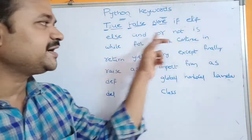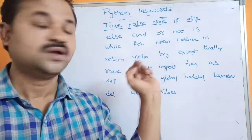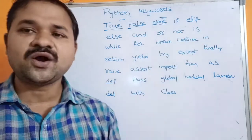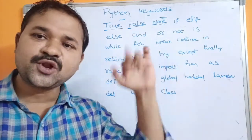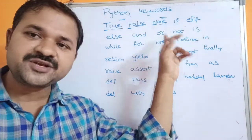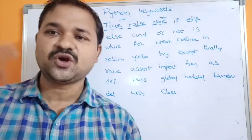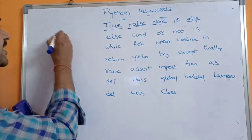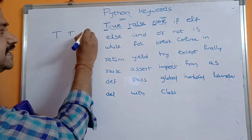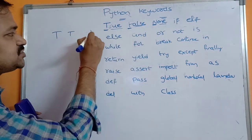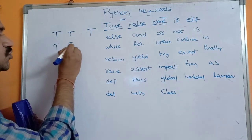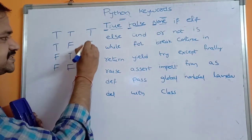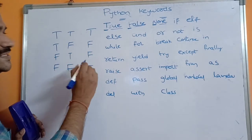The next three keywords are and, or, and not. The and keyword is similar to logical AND, or is similar to logical OR, and not is similar to logical NOT. For the and keyword: if both operands are true, the result is true; otherwise — true/false, false/true, or false/false — the result is false.